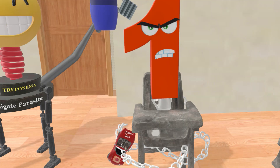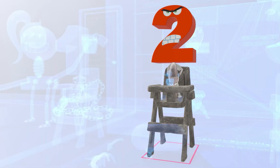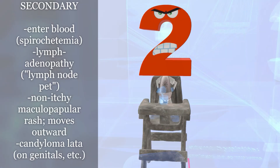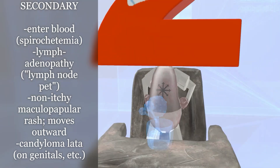After primary syphilis comes secondary syphilis. Here we have brother number two representing secondary syphilis. Secondary syphilis is the dissemination stage, occurring about 6 to 12 weeks after initial infection. In this stage, spirochetes enter the bloodstream — also known as spirochetemia — causing generalized lymphadenopathy, meaning spirochetes can be found in lymph nodes throughout the body. This boy has a lymph node as a pet to remind us of the lymphadenopathy. We also notice a rash on his chest.